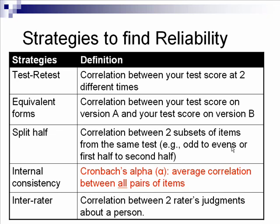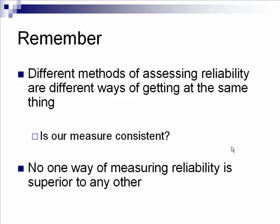Finally, there is inter-rater reliability, where you take a correlation between two different raters' judgments about a person. If the correlation is high, we have evidence of reliability. One thing to drive home is that the different methods of assessing reliability are simply different ways of answering the same question: is our measurement consistent? No one method — whether split halves, Cronbach's Alpha, or test-retest — is superior to any other.